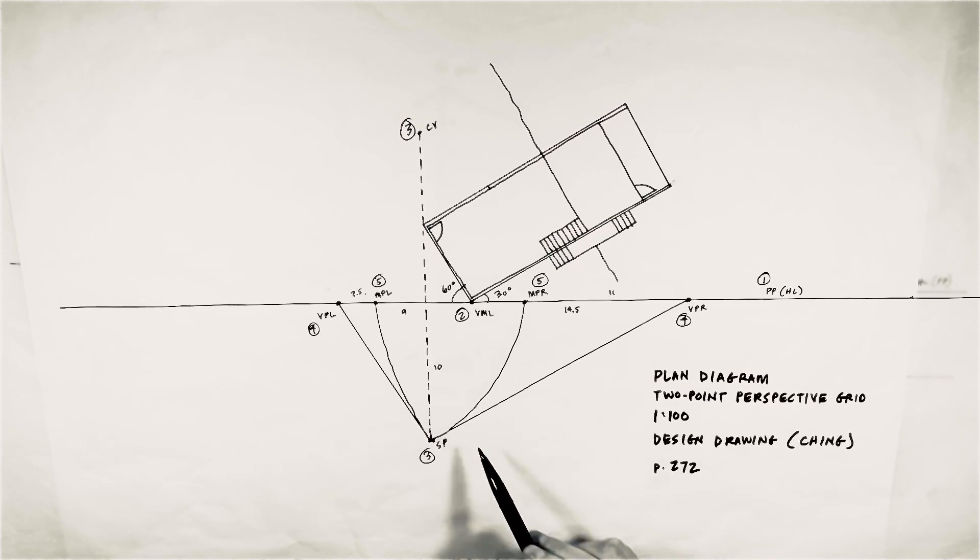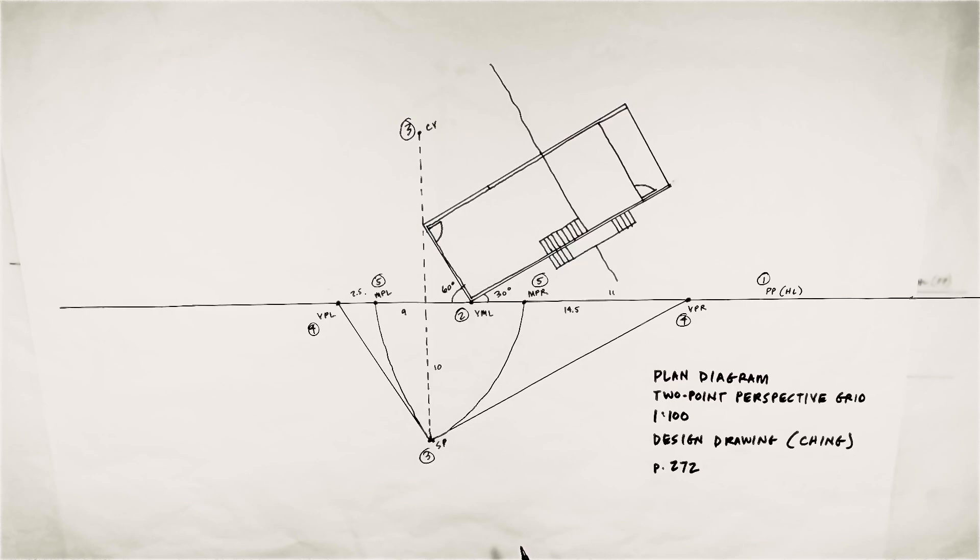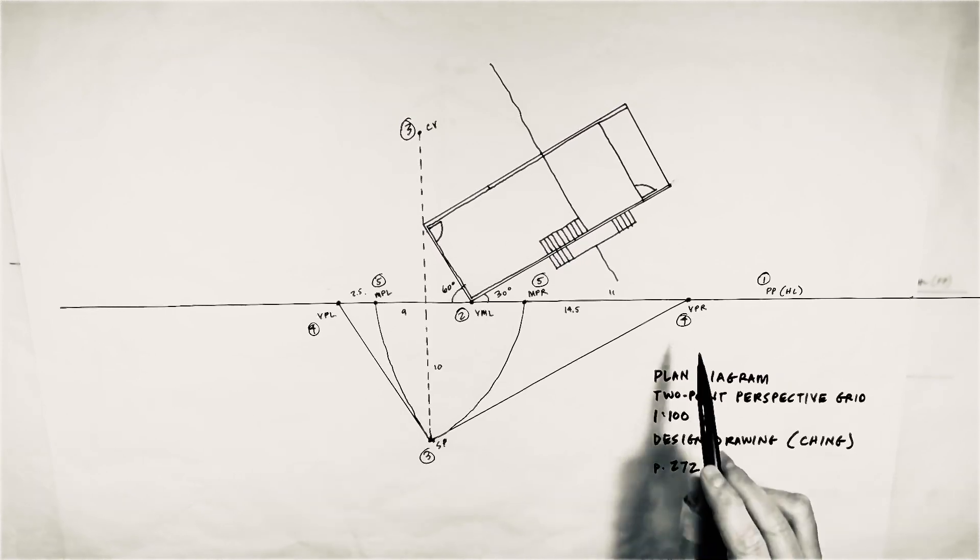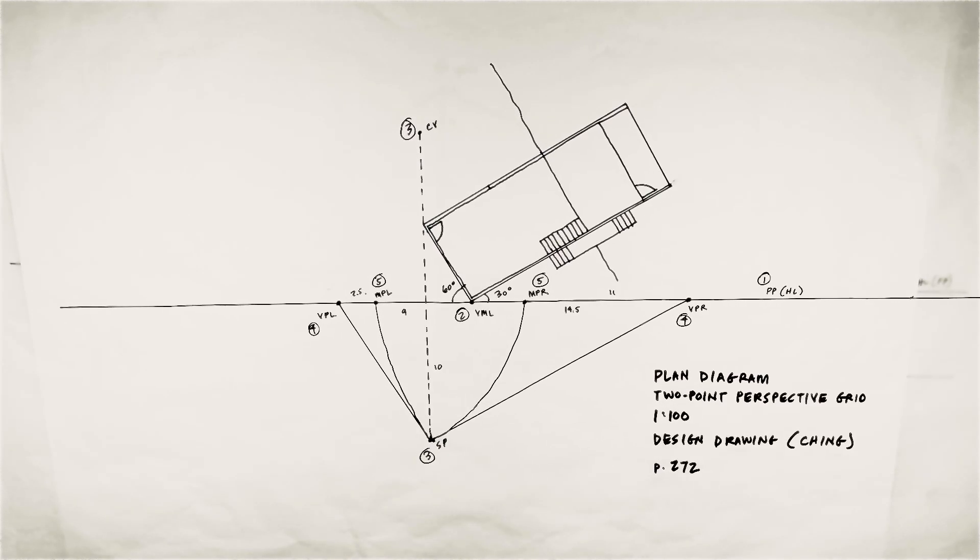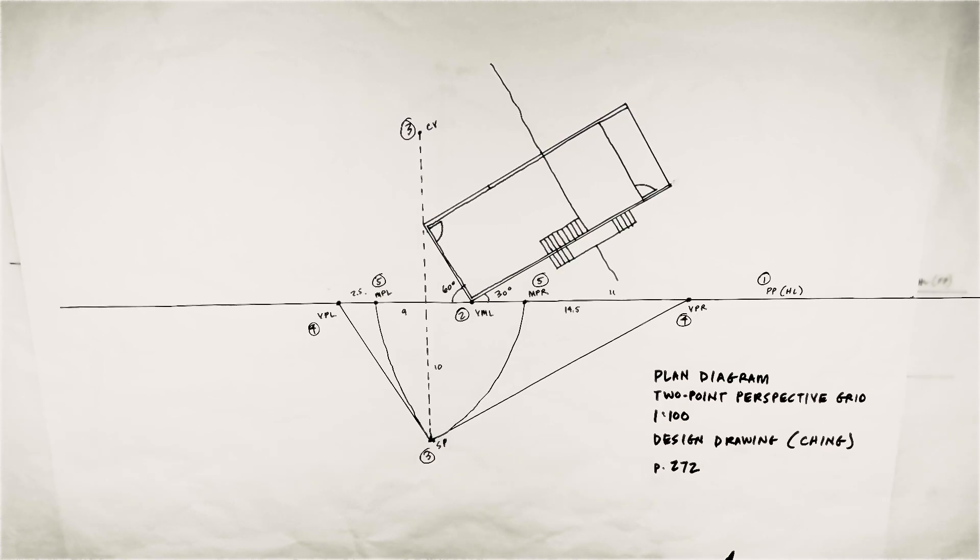Okay, the third thing I want to do is set my station point, which I just backed up again, 10 meters. Number four, then obviously, are the vanishing point left and the vanishing point right, which again are adjusted 30 and 60. 60 in this direction, 30 in that direction. Again, parallel to those lines that we find in the building.